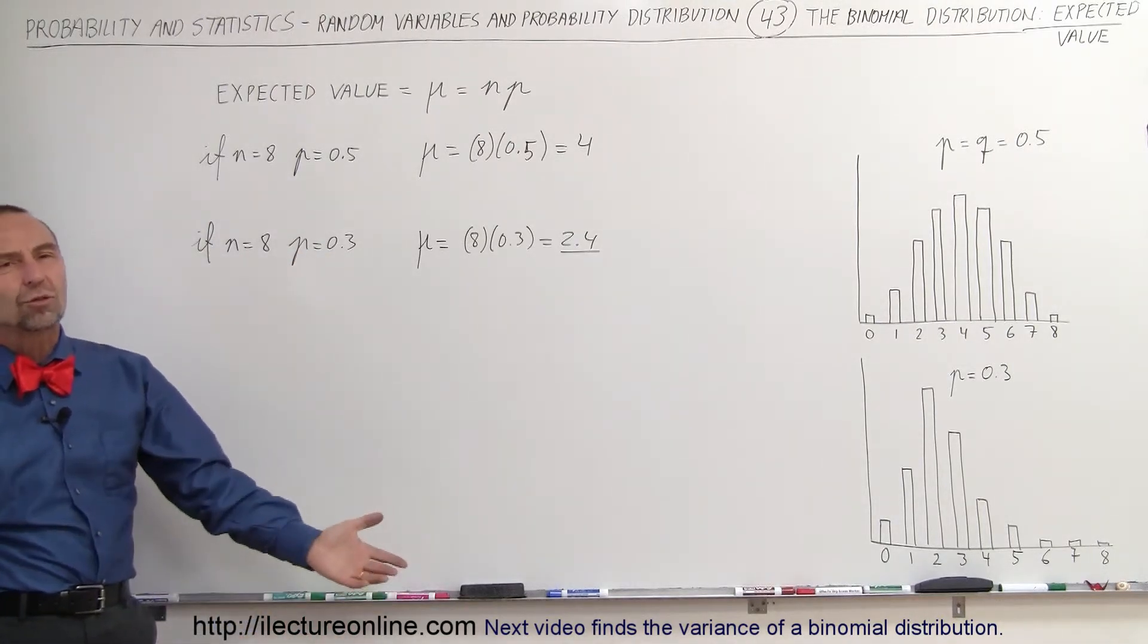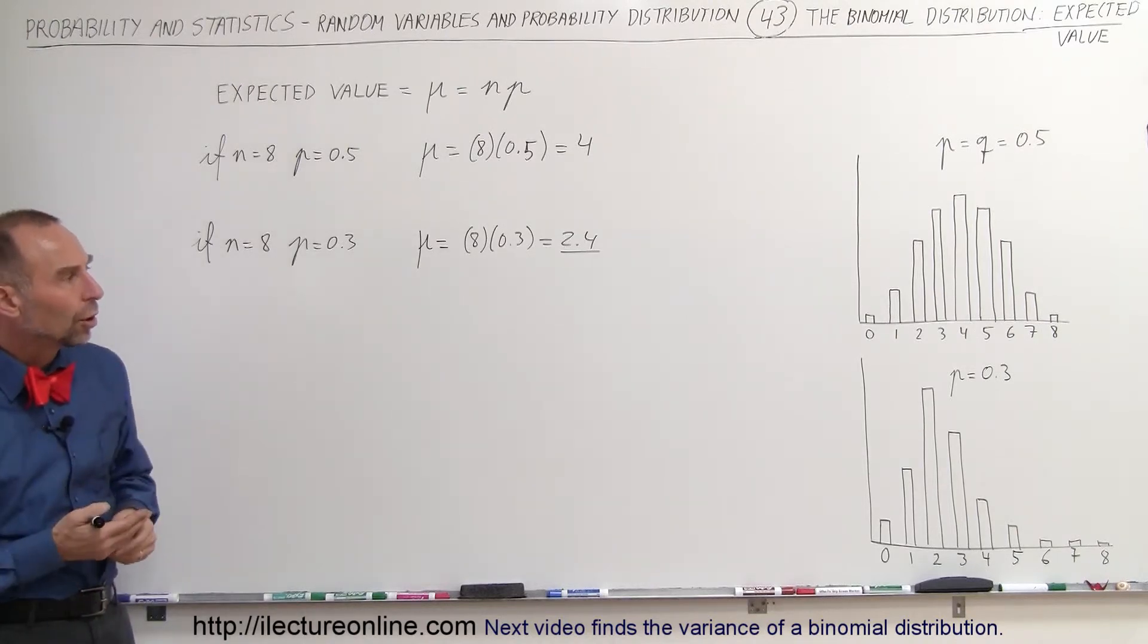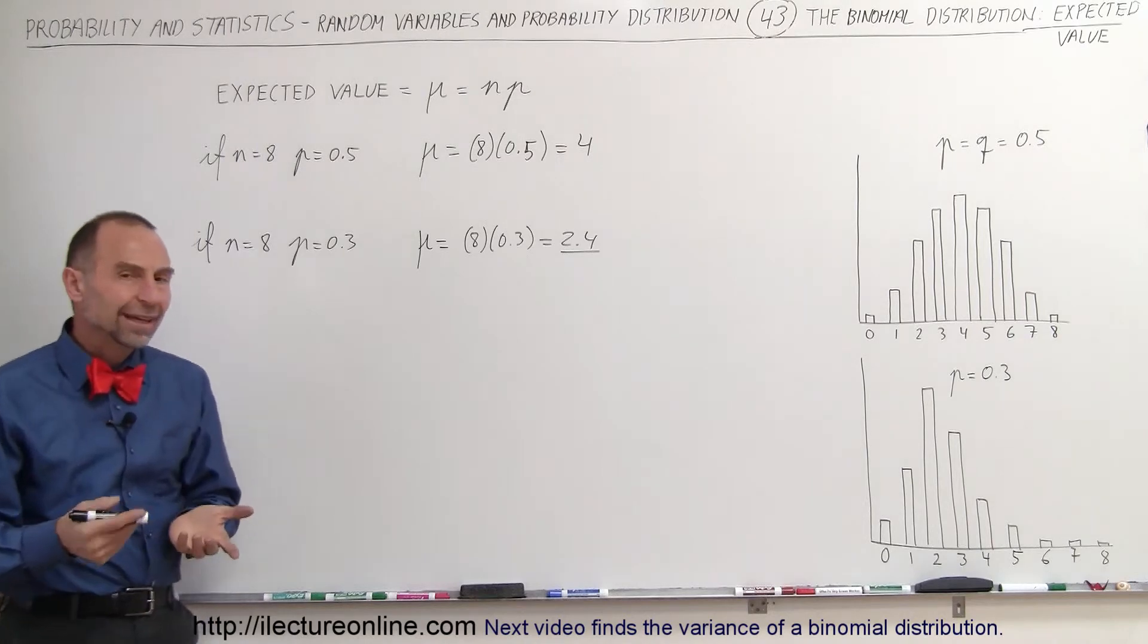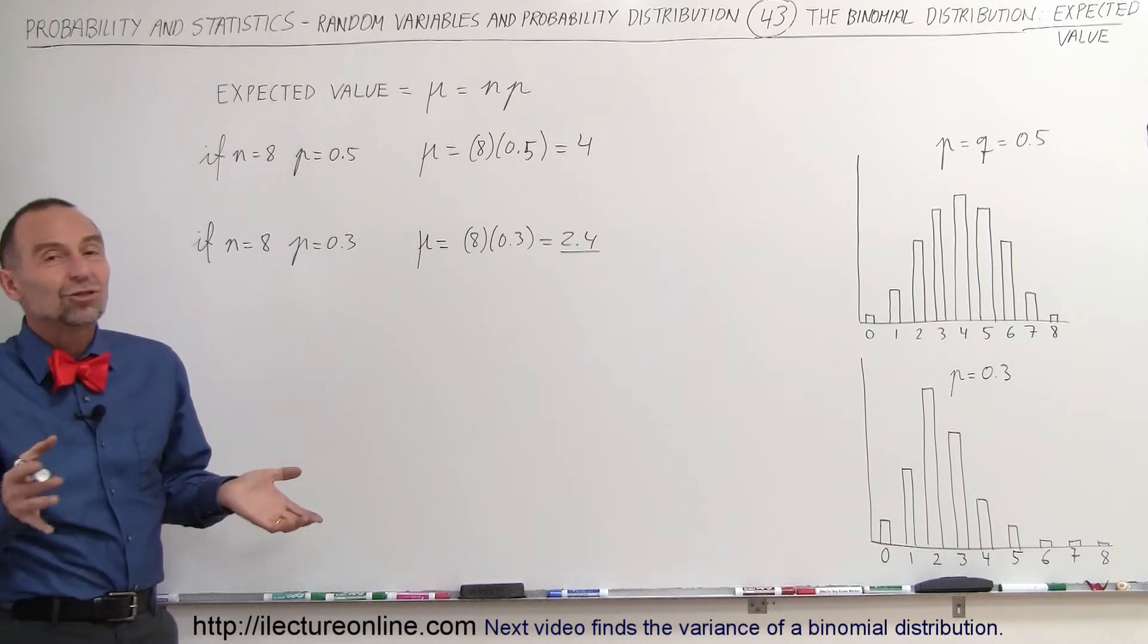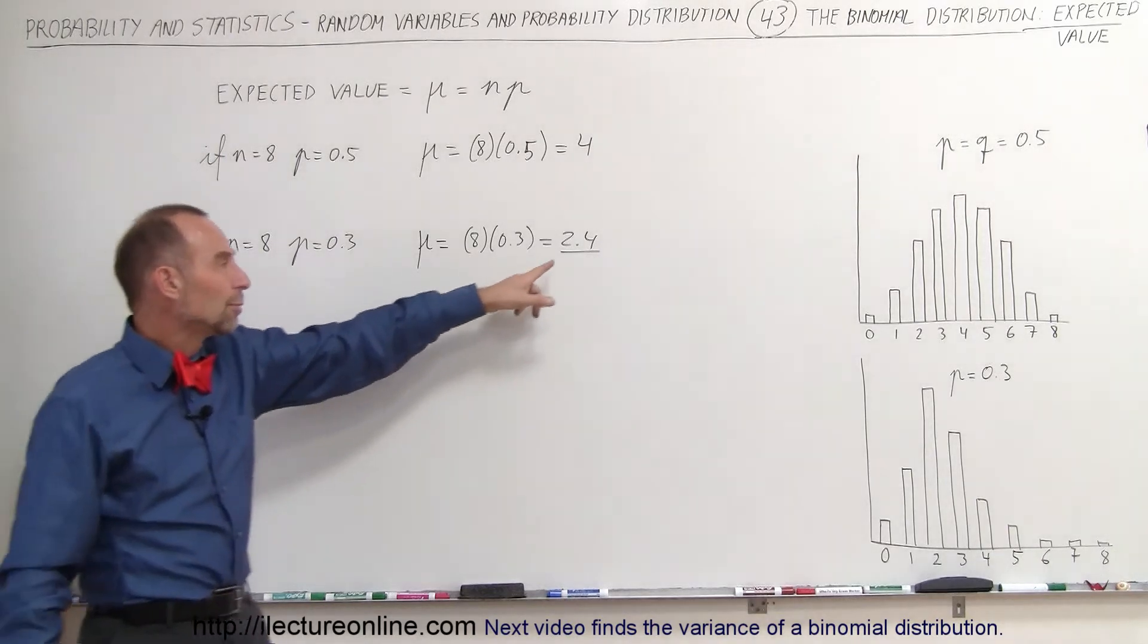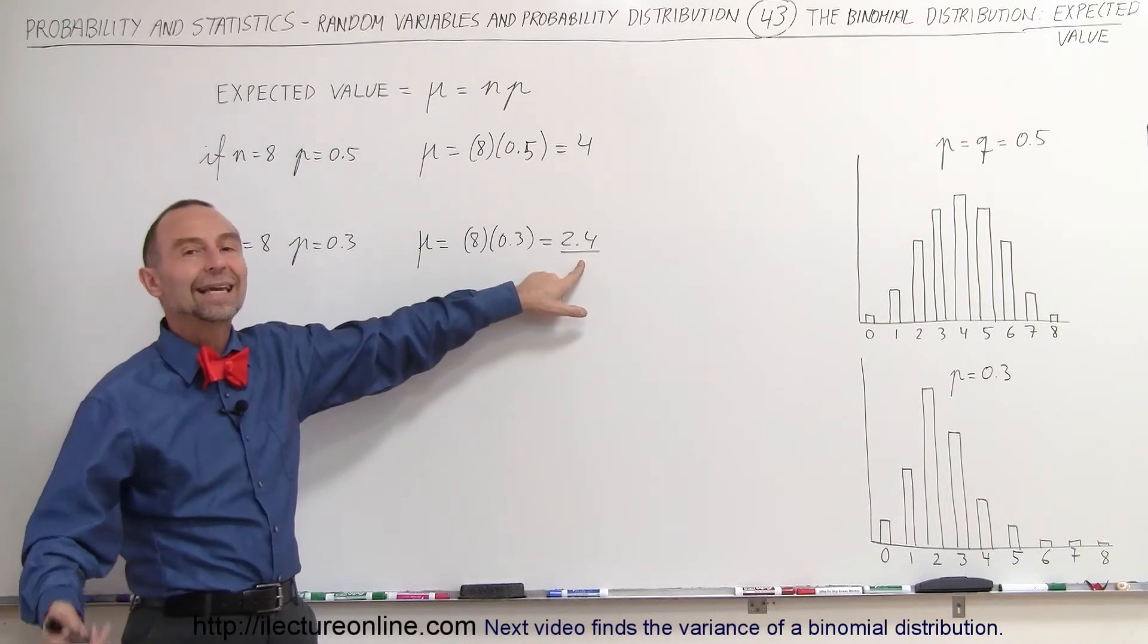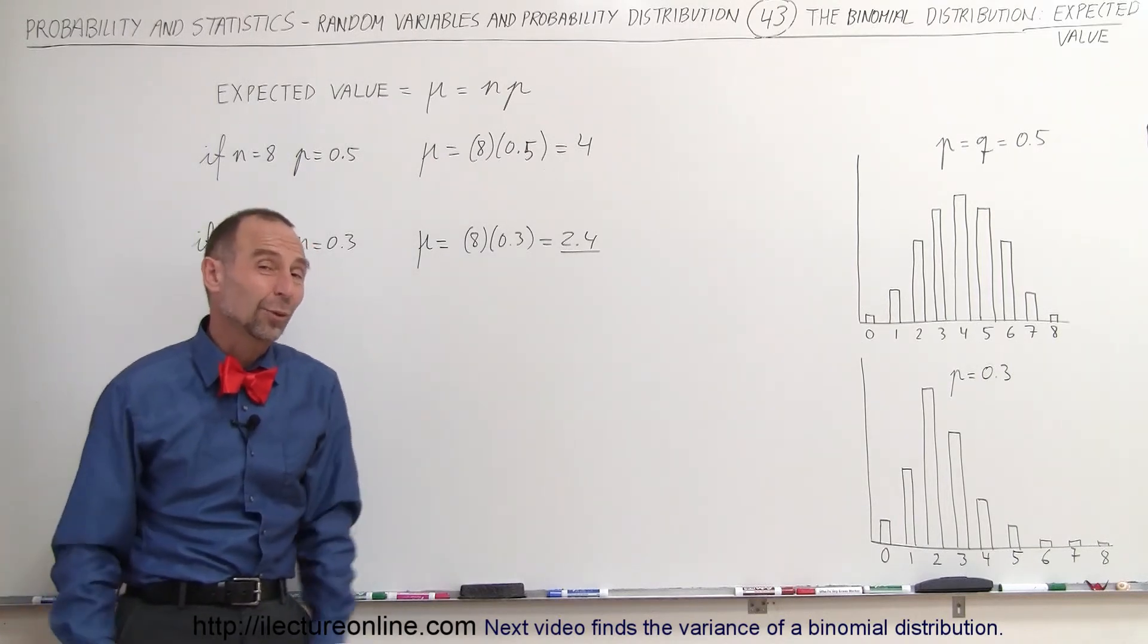Of course, in a binomial distribution, we have an integer number of what we would call trials. You would expect an integer number of successes. And of course, 2.4 is not an integer number, but that's okay. We can see that in this case, we would pick 2 as the most likely integer number to occur because 2 is closer to 2.4 than 3, and that's another way to look at it.